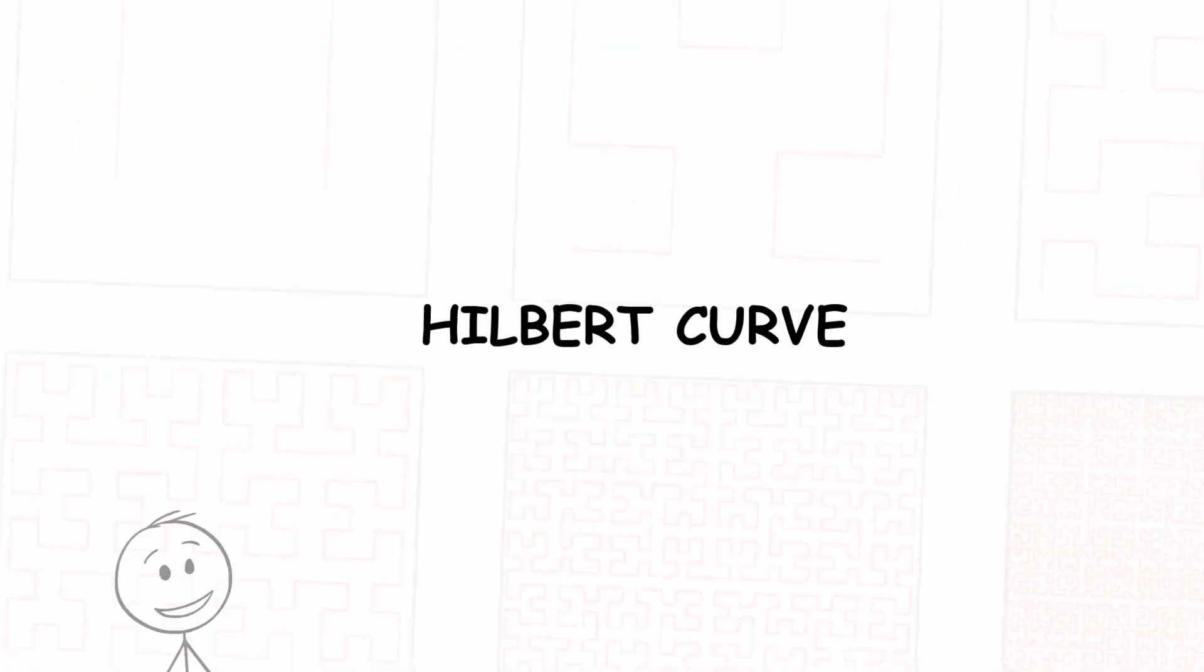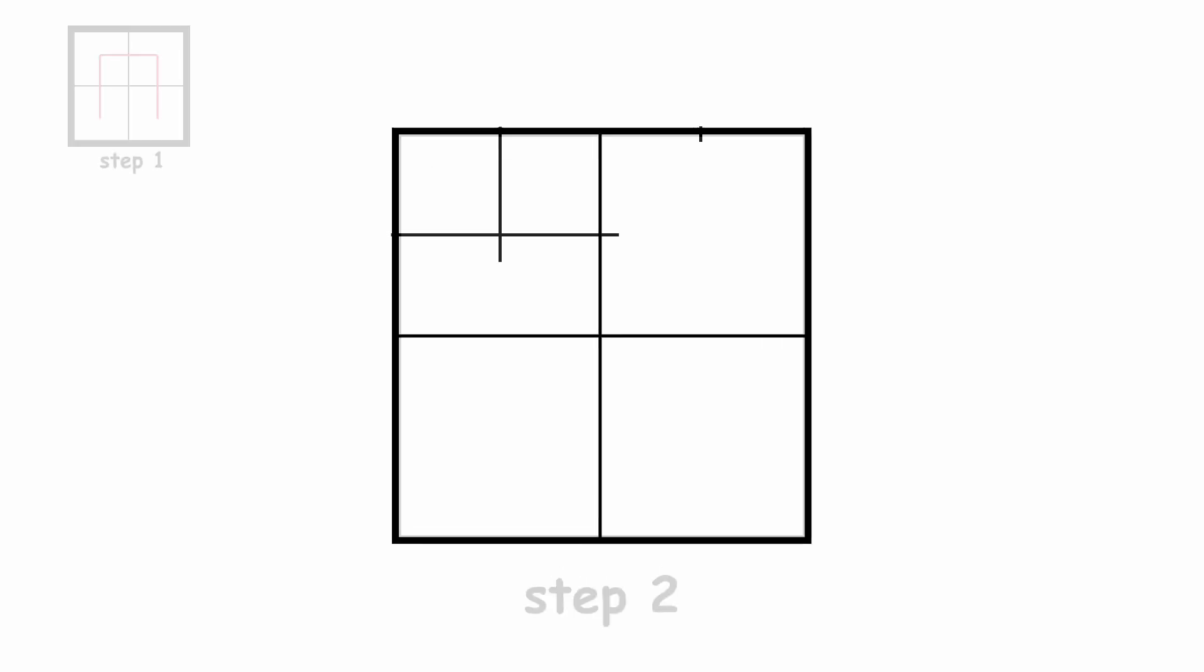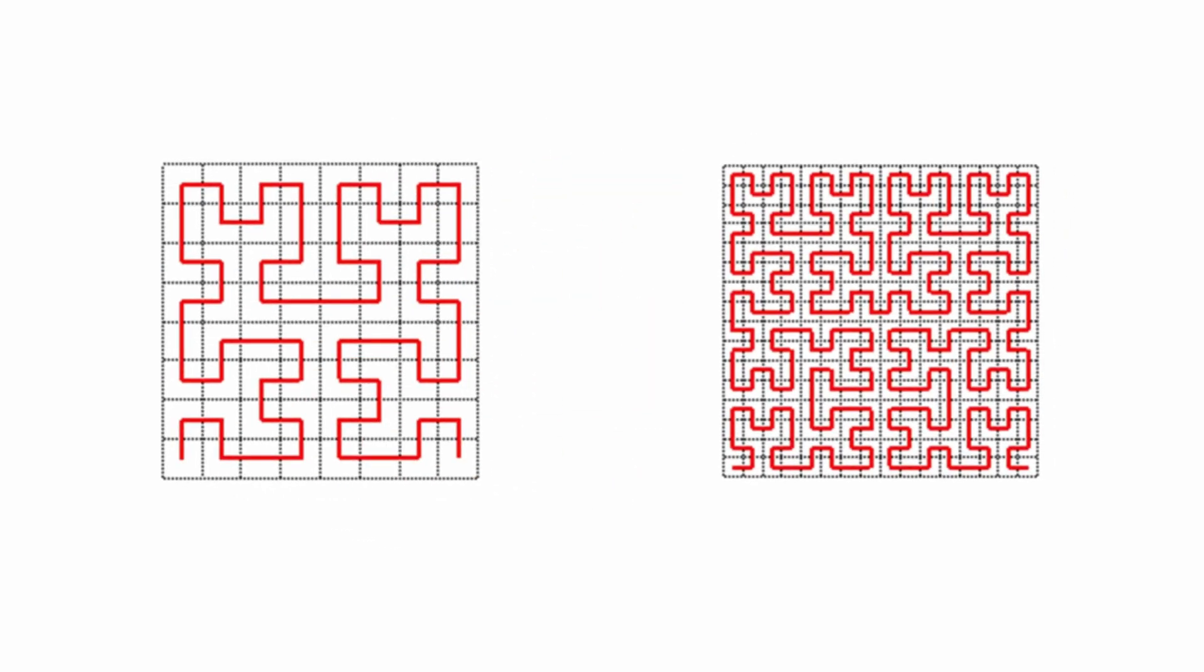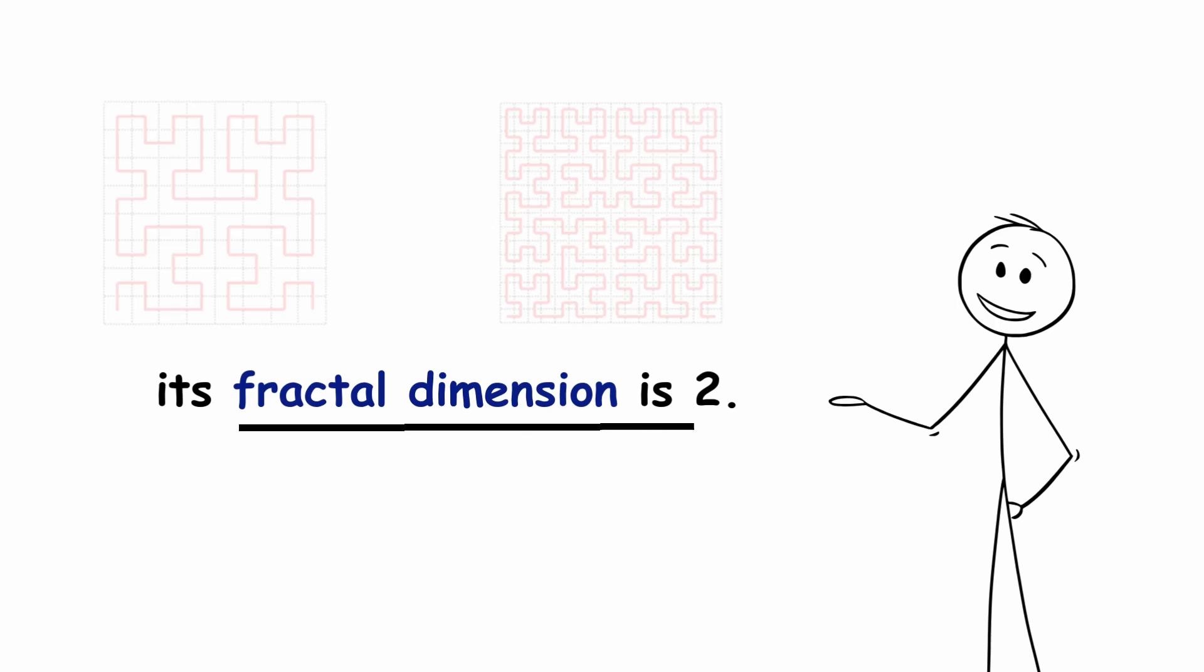The Hilbert Curve is a continuous curve that passes through each point of a square, filling the space in its entirety. It starts by dividing a square into four equal squares and joining their centers with a U-shaped curve. The next step is to divide each square into four parts again and join their centers in a U-shaped curve that links to the next one. The Hilbert Curve fills the entire plane, therefore its fractal dimension is 2.